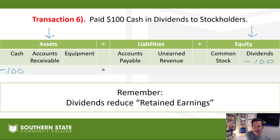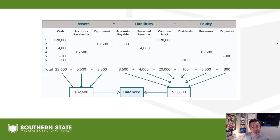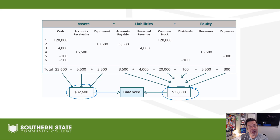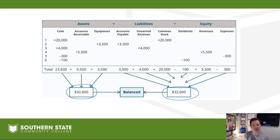You'll notice that every transaction has one account on the asset side going up or down, and a corresponding account on the liability and equity side moving in correspondence. Taking all six transactions together, on the asset side they add up to $32,600, and on the liabilities and equity side they also total $32,600. Every transaction leaves the accounting equation in balance — it's perfect accounting harmony. Everything works out in a perfect circle.